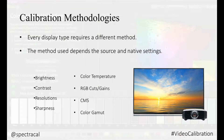Every display type requires a different method for calibrating the color output. The method used depends on the following: the video source — is the content from a Blu-ray player or a computer, a video output device, or something else — and the native display settings, meaning what picture settings are available to the user.